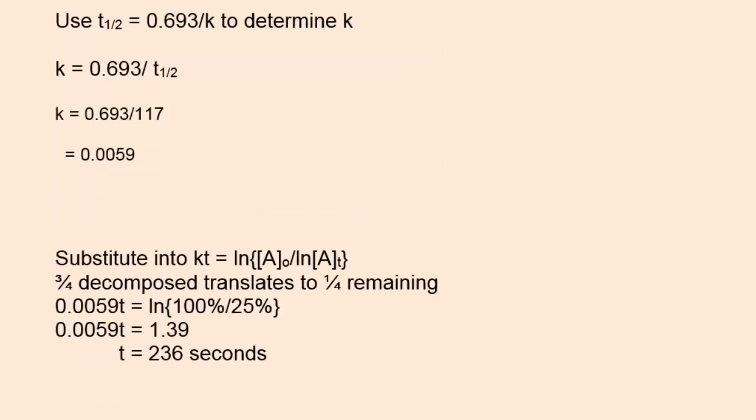We can now substitute the value for K in the first-order integrated rate equation. Because we're told three-quarters of the reactant decomposes, that translates to one-quarter or 25 percent that the reactant remains at that particular time. A0, 100 percent, and At would be 25 percent. We solve for T and come up with 236 seconds.